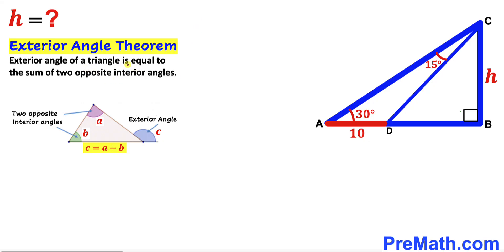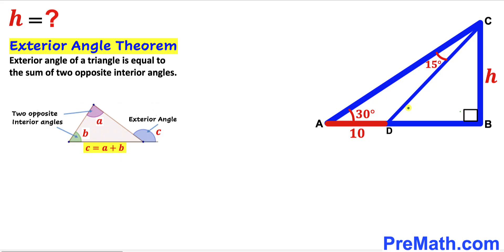According to the exterior angle theorem, the exterior angle of a triangle is equal to the sum of the two opposite interior angles. In our case, angle BDC is our exterior angle, and it is equal to the sum of the two opposite interior angles. Adding 30 degrees plus 15 degrees gives us 45 degrees as our exterior angle.